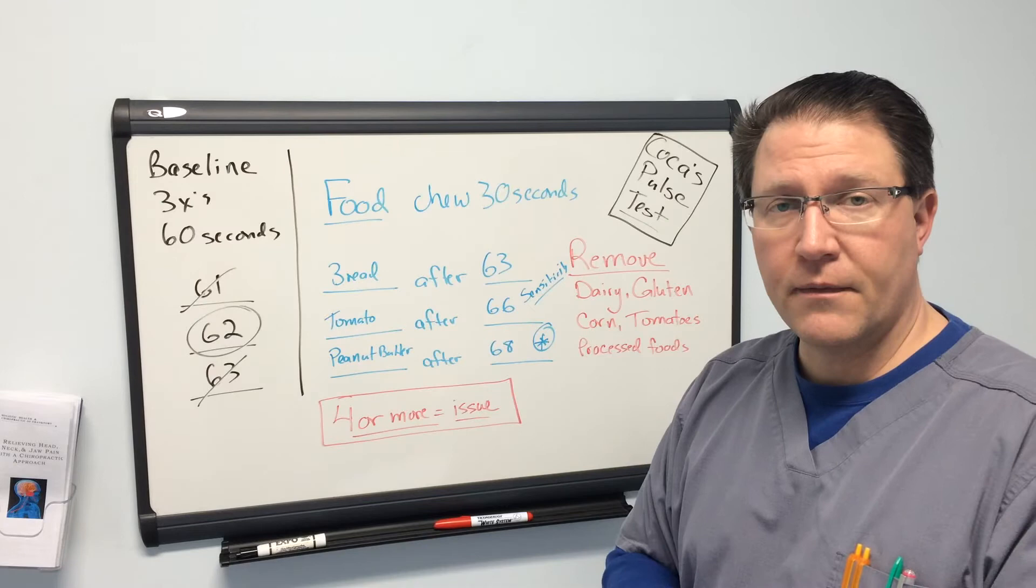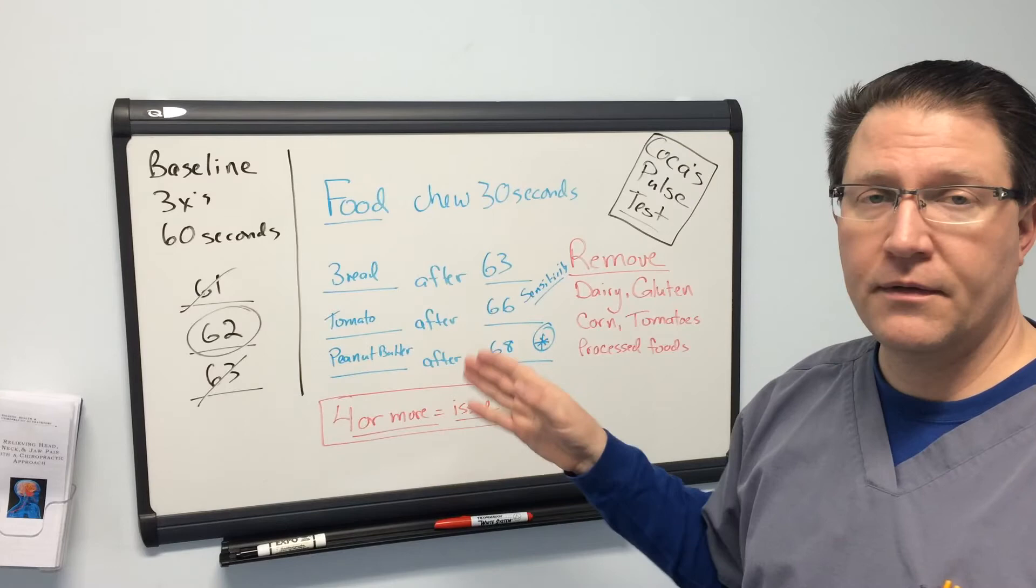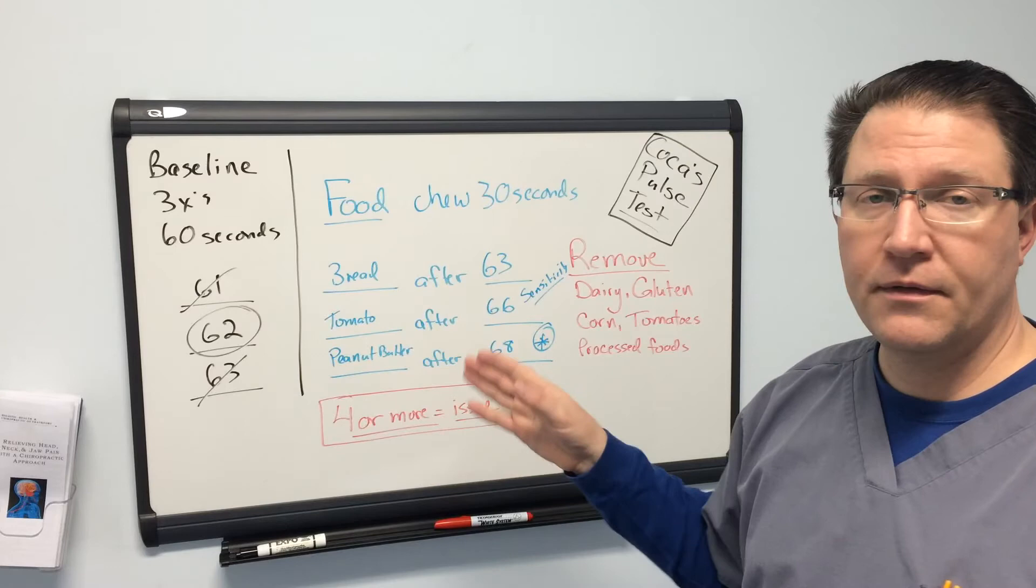Okay, so what did we learn? We talked about getting our baseline, check your pulse three times for a full 60 seconds, take the average and compare that to the foods that you're testing. Anything that's four or more, you probably are having a sensitivity to, and if you need further evaluation, just give us a call at the office and we'll be happy to help you.